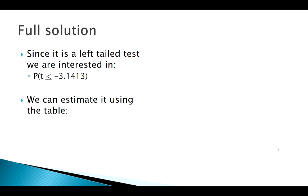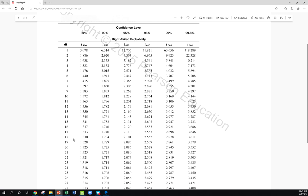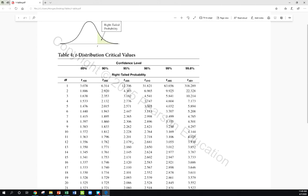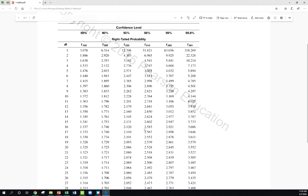Remember, our p-value would be represented by this area. Since it's a left-tailed test, the area to the left of our test statistic. Let's try to estimate that with our table. We're working with 20 degrees of freedom. Remember, our table gives us the area to the right, but we know the t distribution is symmetric, so the area to the right of positive 3.14 should be the same as the area to the left of negative 3.14. I'm going to go with 20 degrees of freedom and try to find 3.14. Well, I don't see 3.14, but it's somewhere between these two numbers, that's telling me that my p-value is somewhere between these two numbers up here: 0.001 and 0.005. So we've estimated that p-value.